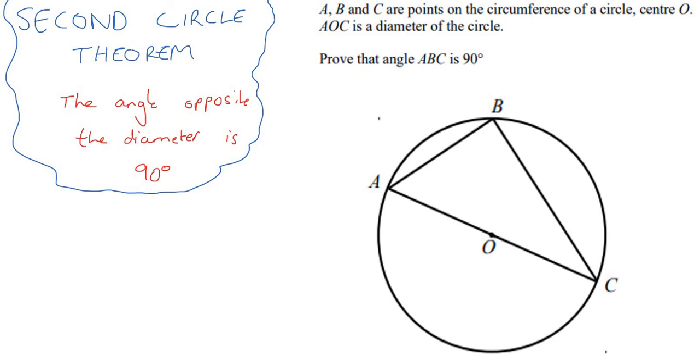Now, if you don't remember what that was, it basically said that the angle at the center is twice that of the angle at the circumference. So let's take a look at this one and prove it. What does it say? The angle opposite the diameter is 90.